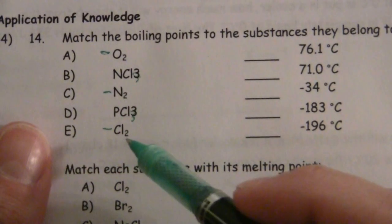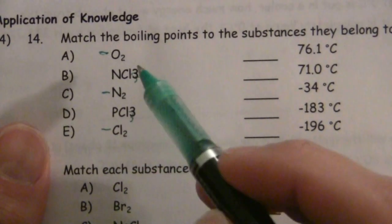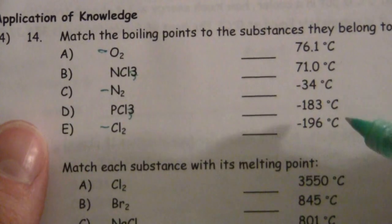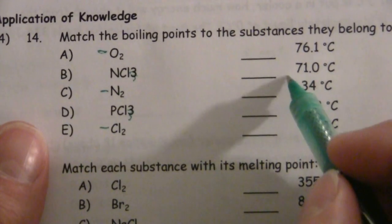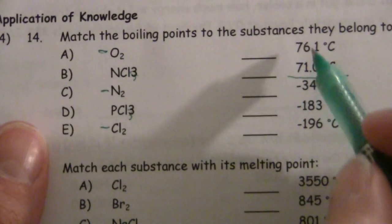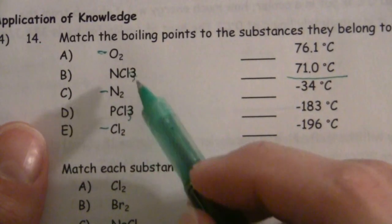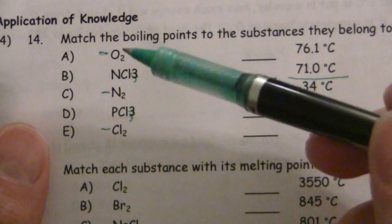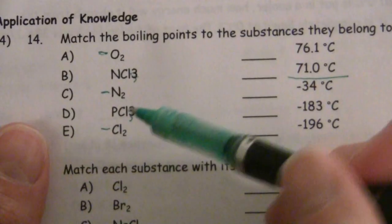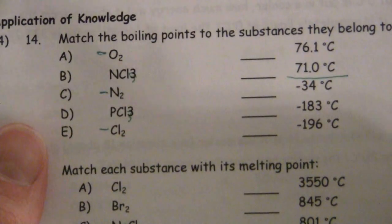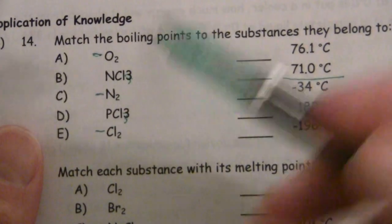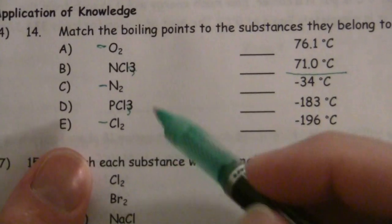Between those three non-polar ones, we know they're going to be on the low end of the spectrum, and these two polar ones are going to be higher. So the lowest three are down here, and those three must belong to the non-polar substances, and then the two higher ones belong to the polar ones. Now it becomes a question of size, or weight rather, because the heavier the molecule is, the more energy it takes to get it excited enough to boil it into the vapor state.